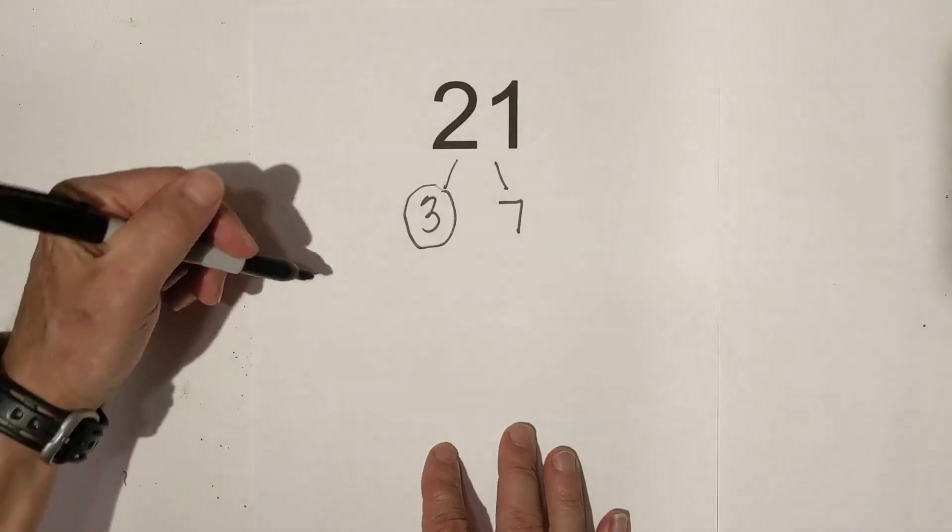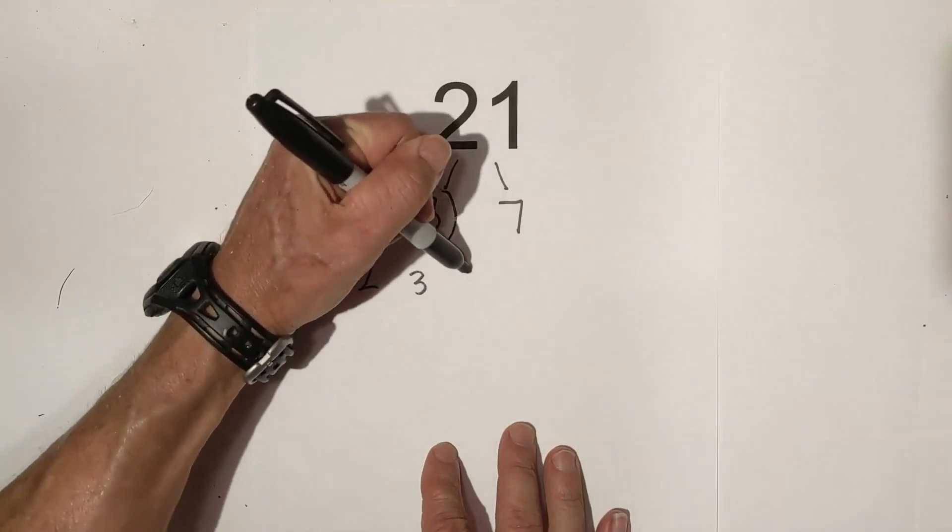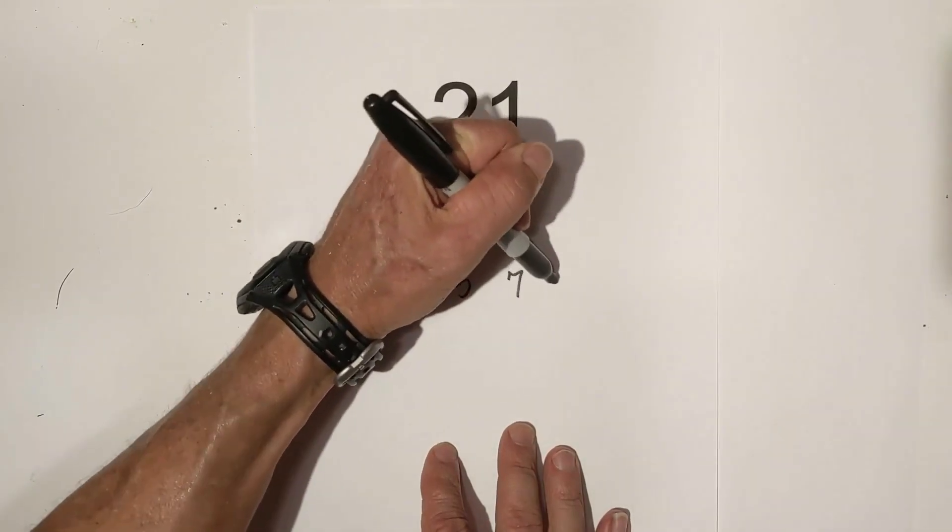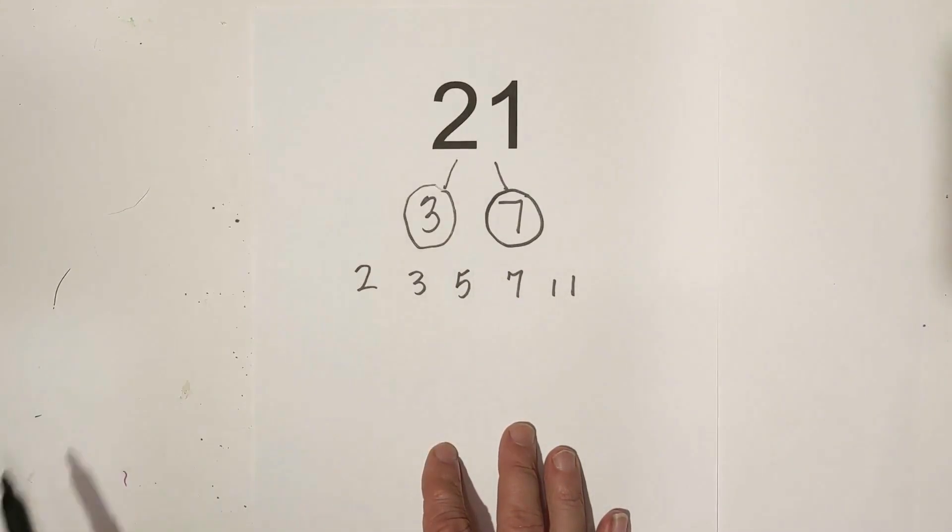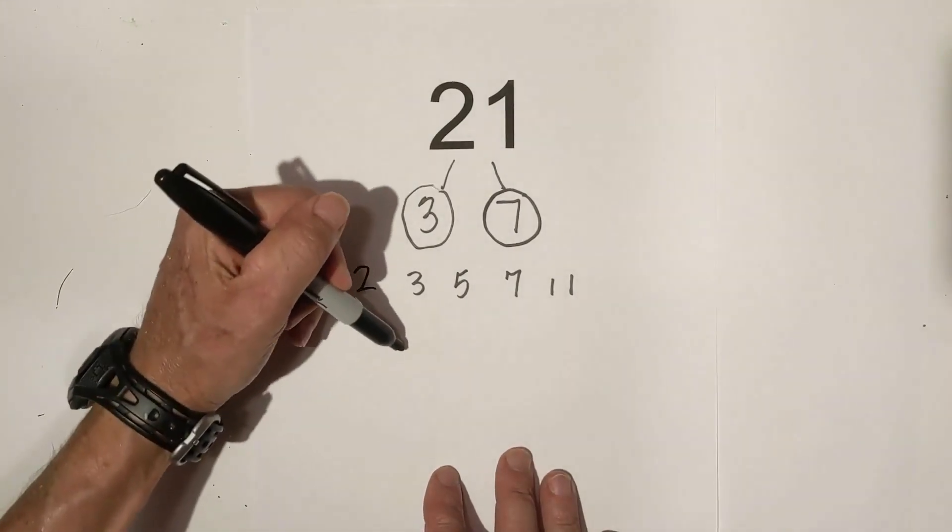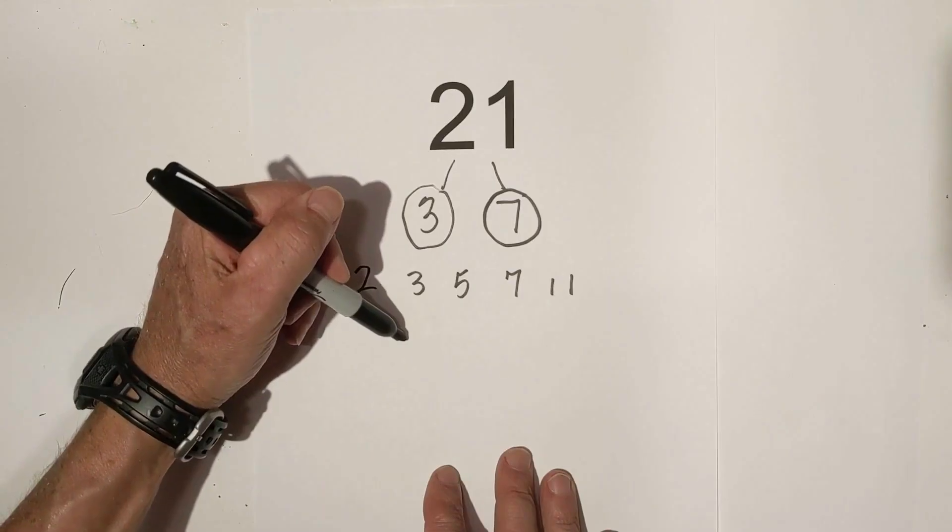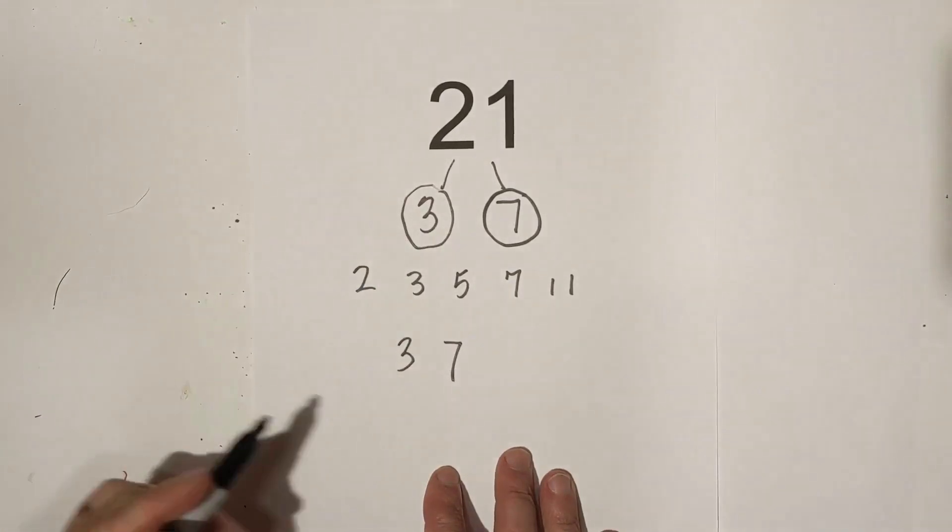And remember the numbers that I said will be helpful for you to know: two, three, five, seven, and eleven. So seven is a prime number, so I am down to prime numbers, so I'm finished. So the prime factors of 21 would be three times seven. Notice I'm writing it from the smallest to the largest.